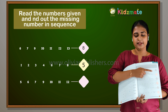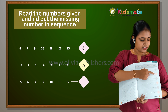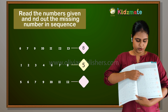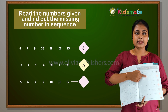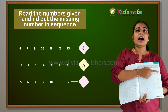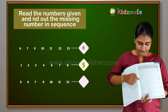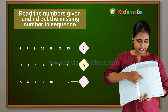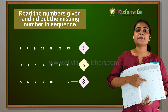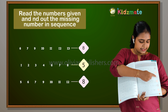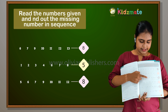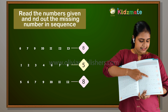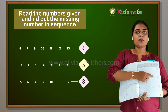Six, seven, eight. What is missing from here? One, two, five. Six, seven, eight, nine, ten, eleven, twelve.